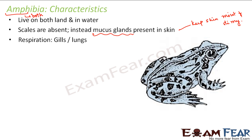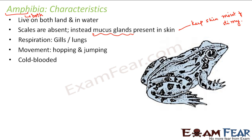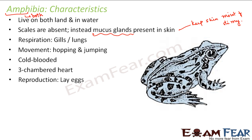Respiration in amphibians occurs either through gills or through lungs. Their movement involves hopping and jumping. Like fishes, they are also cold-blooded. Amphibians have a three-chambered heart, compared to the two-chambered heart of fishes. They reproduce by laying eggs, generally preferring to lay them in water.